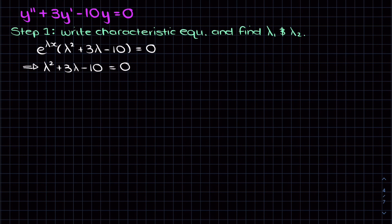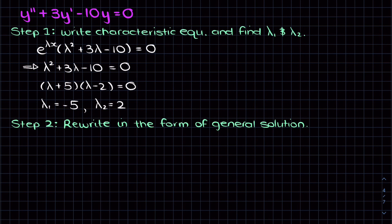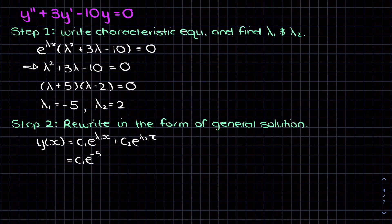Now we want to find lambda. We can either factor or use the quadratic equation. Here we can just factor and we find that lambda 1 equals minus 5 and lambda 2 equals 2. So we're working with the first case where lambda 1 does not equal lambda 2 and both are real numbers. Recall that we assumed our solution takes the form e to the lambda x. We have two lambdas, and because our ODE is linear and homogeneous and our two solutions are linearly independent, we can use the superposition principle. The general solution is y of x equals c1 e to the minus 5x plus c2 e to the 2x for some constants c1 and c2.